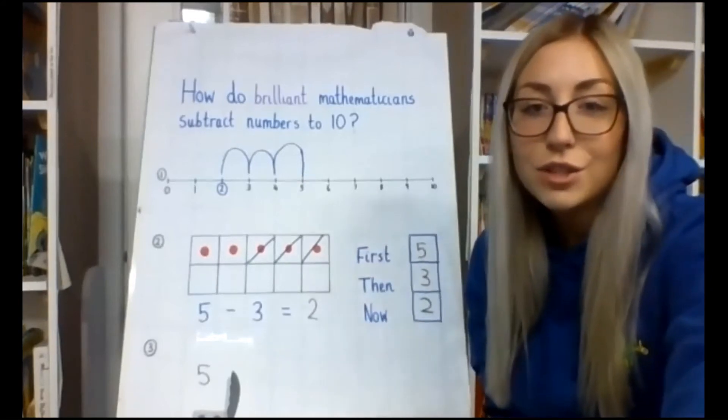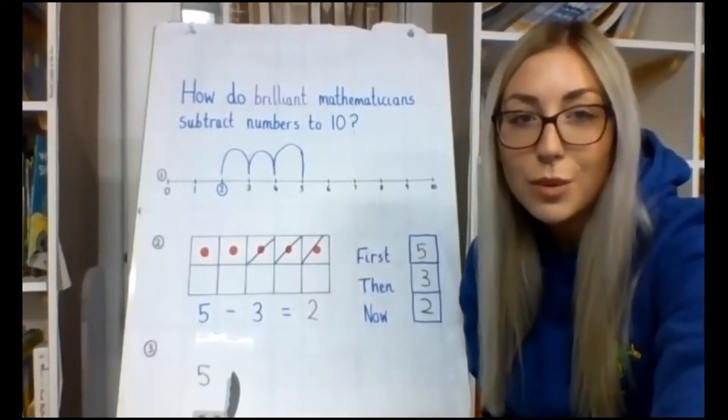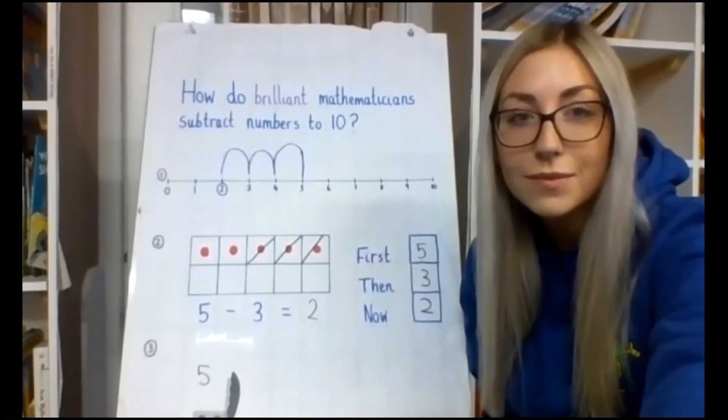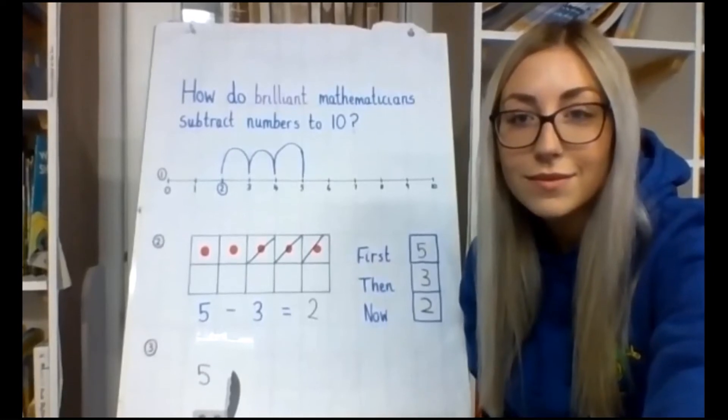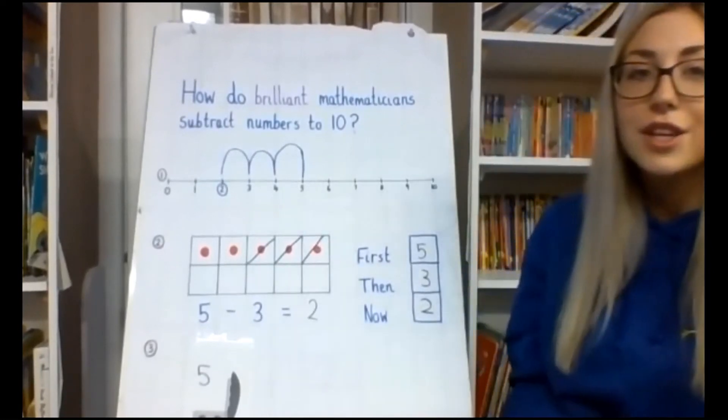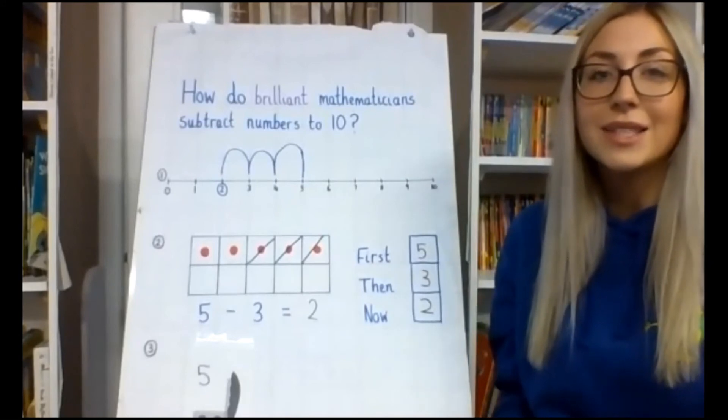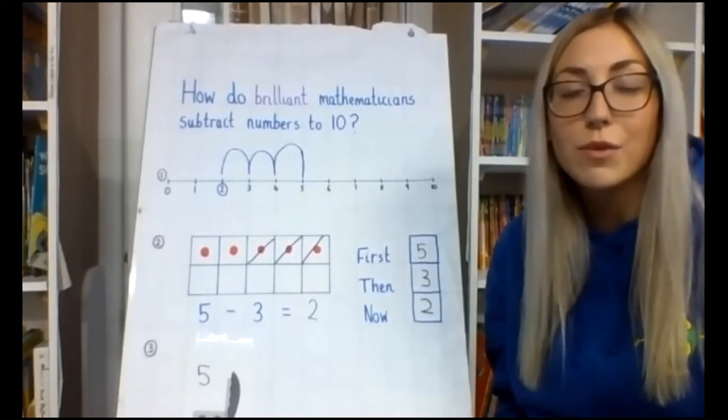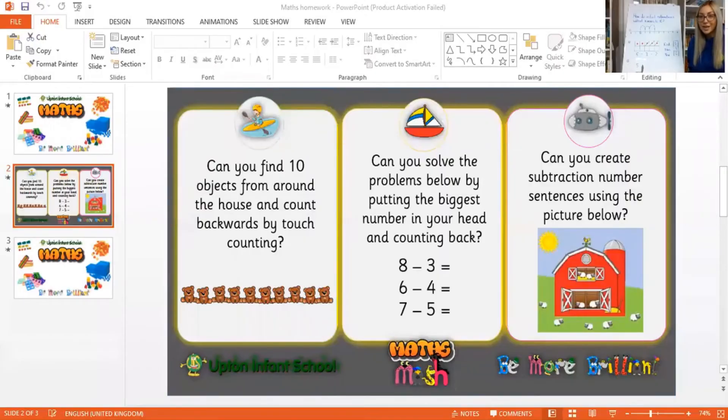So I am just going to share the screen now to show our challenges for this week. Here we go. So the challenge this week is, can you find 10 objects from around the house and count backwards by touch counting?